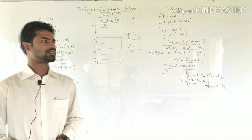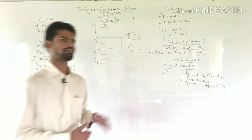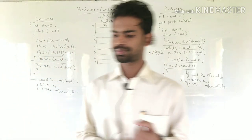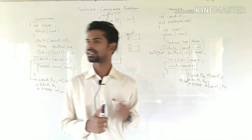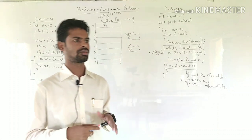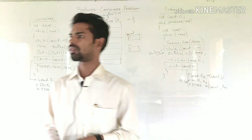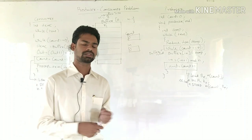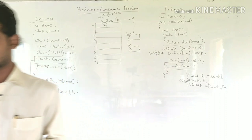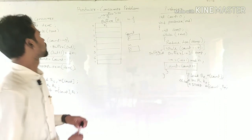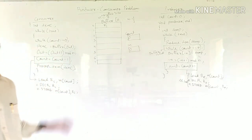Hello, good morning. Let us discuss one problem of synchronization. There are two types of processes — one is cooperative process. Synchronization problems occur in the case of cooperative processes. If one process affects another process or is affected by another process, then it is called a cooperative process.